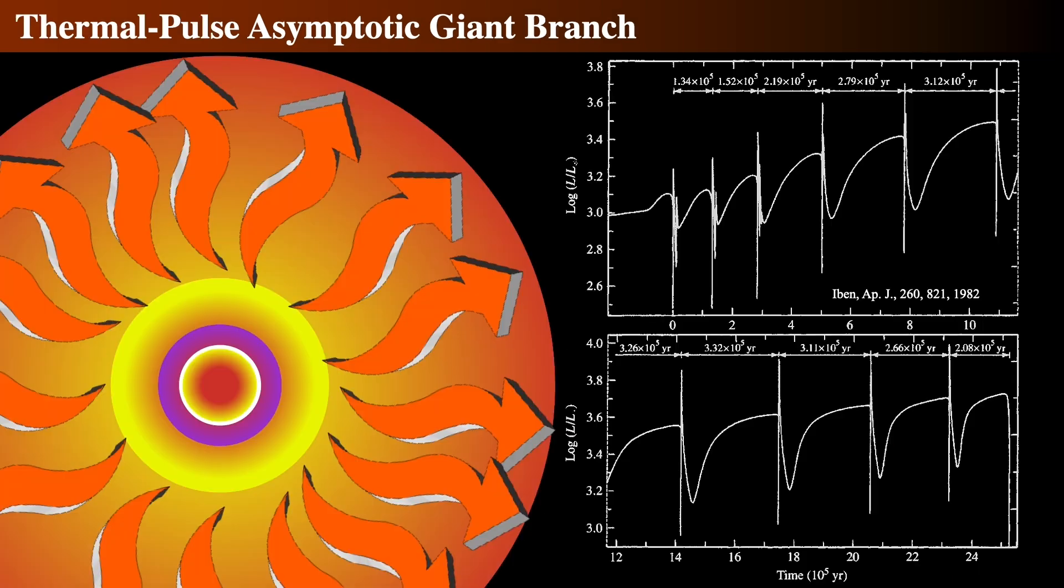As it reaches the upper portion of the asymptotic giant branch, the quiet hydrogen-burning shell reignites and dominates the star's luminosity source. This time, however, the helium-burning shell is being forced to occupy an ever-narrowing layer of the star's core.